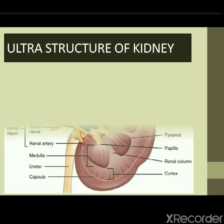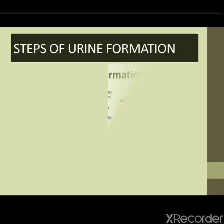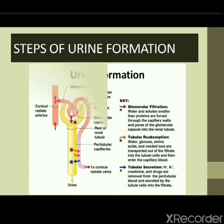Looking at the ultrastructure of the kidney, as discussed, the outer portion is the cortex and the inner portion is the medulla. In the medullary region you will find several pyramids, and at the base of the pyramids the papilla is present. In the cortex region there are also blood vessels present.